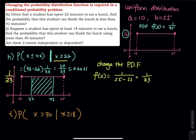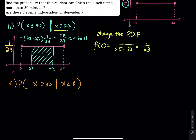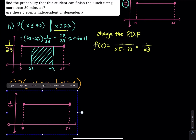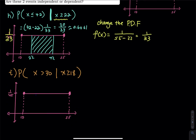We bring the graph back and put the area on it. 18 is here and 30 is over there. We are asking for greater than 30, so the region is from 30 to 55. Do we need to know it's greater than or equal to 18? The answer is no, because greater than 30 already covers greater than 18.